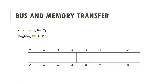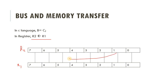Suppose there are two 8-bit registers: register R1 and register R2. If you want to execute this transfer statement, the data of R1 will be transferred into register R2. For that we need connections between each and every bit — the 0th bit is transferred to the 0th bit, the 1st bit is transferred to the 1st bit of register 2, and so on. So we require a connection from each bit of register 1 to the corresponding bit of register 2.